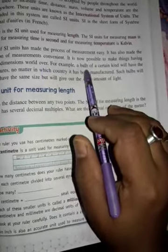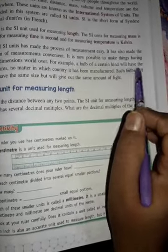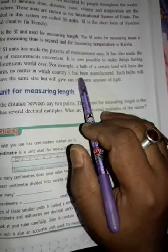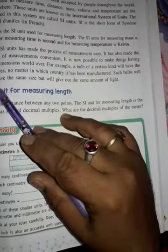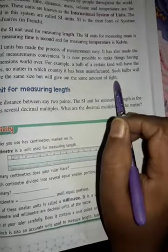For example, a bulb of a certain kind will have the same features no matter which country manufactures it. Such a bulb will not only have the same size but will give out the same amount of light.